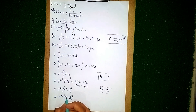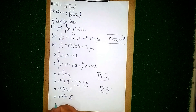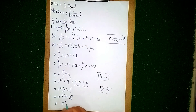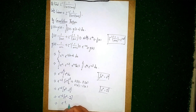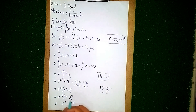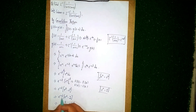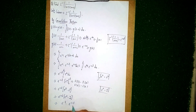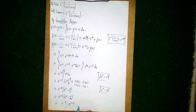Opening the bracket: e to the power minus 2t times e to the power t gives e to the power minus t, and e to the power minus 2t times 1 gives e to the power minus 2t. So the final answer is e to the power minus t minus e to the power minus 2t. This is our solution. Thanks for watching.